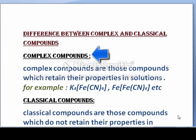Complex compounds are those compounds which retain their properties in solution, for example K4[Fe(CN)6] and Fe[Fe(CN)6].